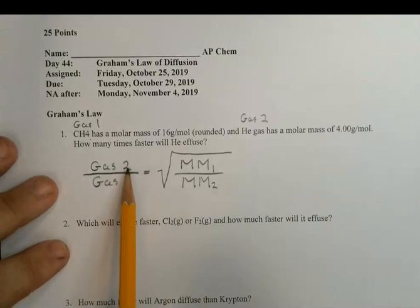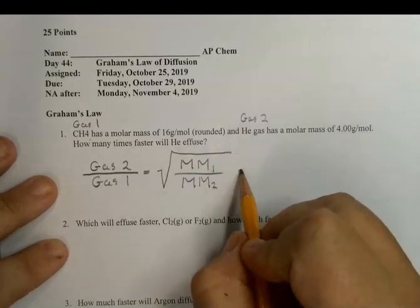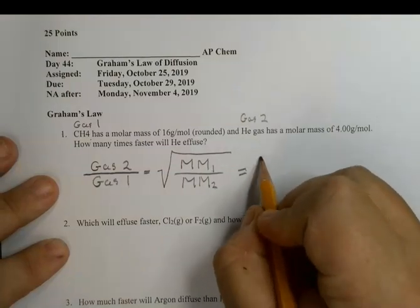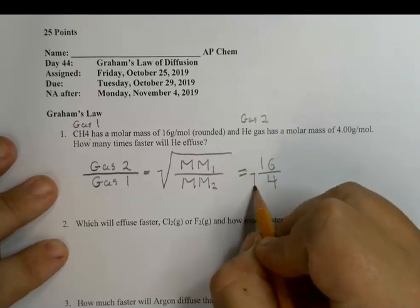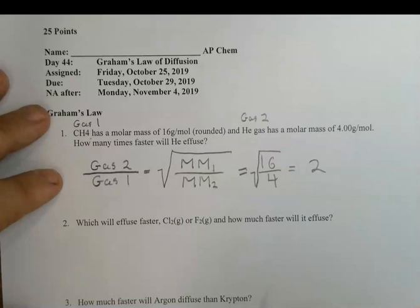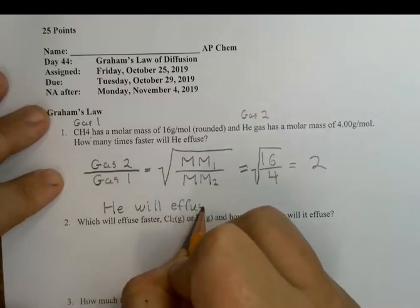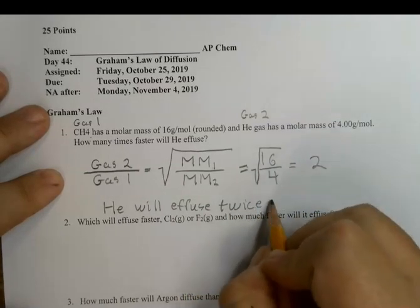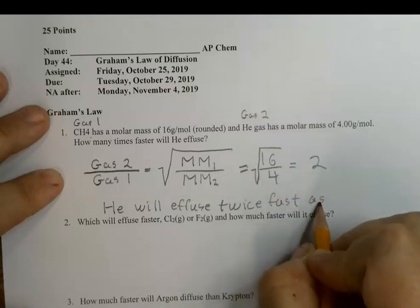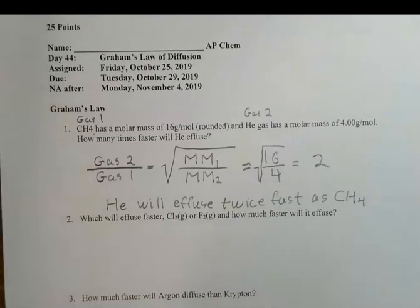If you want the rate of the lighter gas over the heavier gas, inside the square root you invert it: molar mass of one over two. The molar mass of methane is 16 and helium is 4. Under the square root: 16 divided by 4 is 4, and the square root of 4 is 2. Write a brief sentence saying what that means: helium will effuse twice as fast as CH4. We don't know the actual speed, just how much faster helium moves than methane.